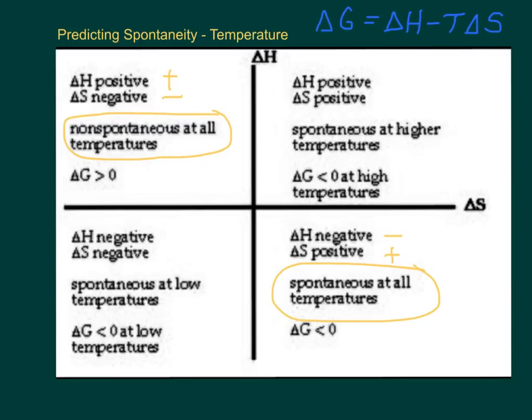What happens if delta H is positive and delta S is positive? Well, let's look at this equation. What if I put a positive here and a positive here? At what point does delta G become negative? Well, it becomes negative when delta S is large. Not when this piece becomes large. So when the temperature is really large, higher temperatures, you'll be taking a big temperature and multiplying it by S, so you're subtracting a large number. So at high temperatures, then it's going to tend to be spontaneous.